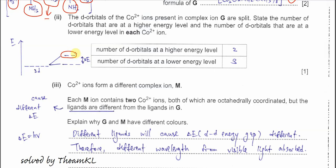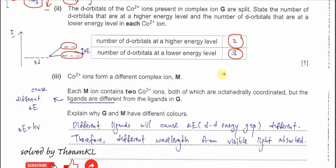The other three d orbitals experience less repulsion from the approaching ligands and sit at a lower energy level than the two. So the answer is: two orbitals at higher energy level and three orbitals at lower energy level.